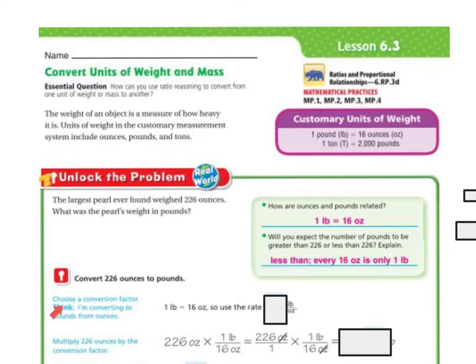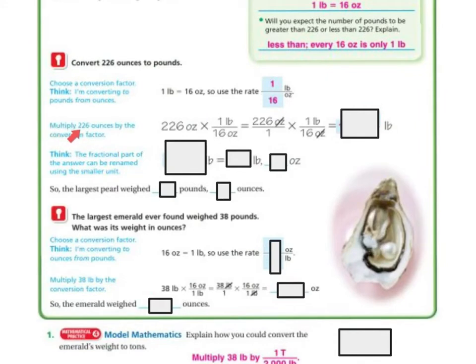Think: I'm converting to pounds from ounces, so one pound equals 16 ounces. I'm going to use the rate 1 over 16. We're going to multiply 226 ounces by the conversion rate, which was 1/16. So 226 times 1 over 16. When we have a whole number, we just add the one underneath.